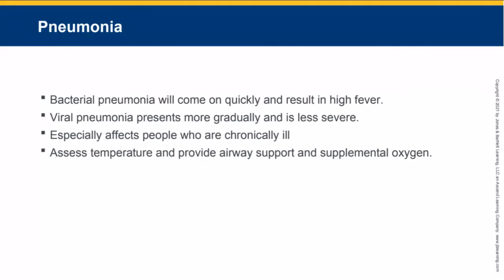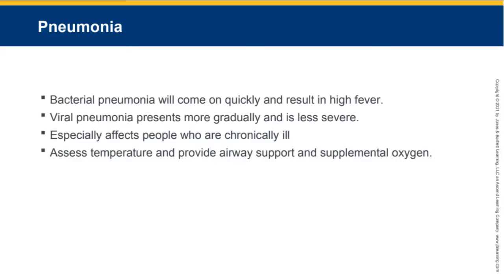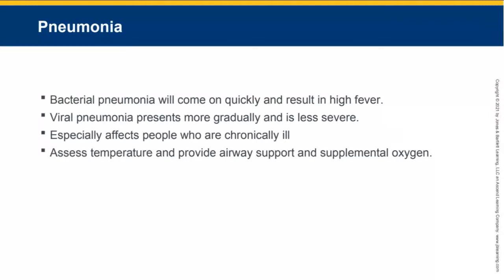Pneumonia normally refers to infection of the lungs. It's often caused by secondary infection that begins in the upper respiratory tract — for example, a draining sinus, flu, or cold that develops into pneumonia. Bacterial pneumonia will come on quickly and result in high fevers, but viral pneumonia is more gradual and less severe. Pneumonia especially affects those who are chronically or terminally ill, such as end-stage renal failure patients who require dialysis. Assess temperature to determine the presence of fever and provide airway support and supplemental oxygen.